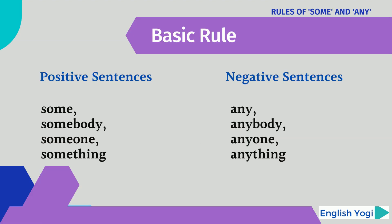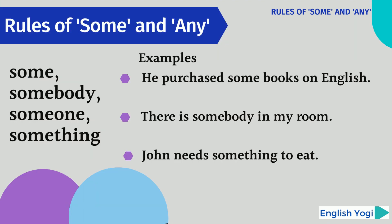One of the basic rules about 'some' and 'any' is: we use 'some', 'somebody', 'someone' in positive sentences, and on the other hand, we use 'any', 'anybody', 'anything' in negative sentences. So this is the basic rule about 'some' and 'any'.